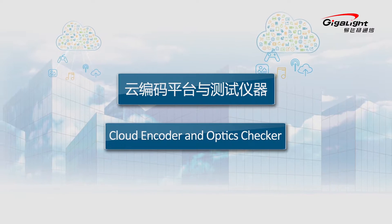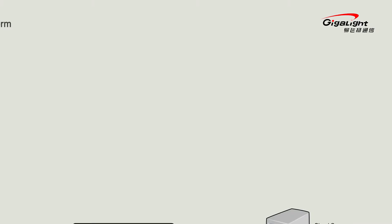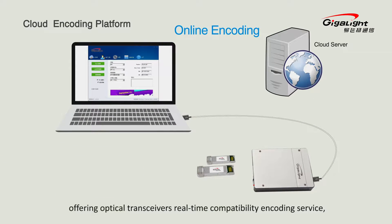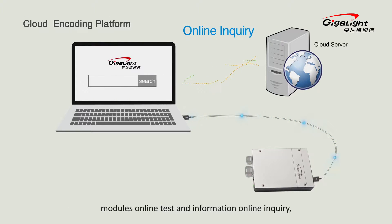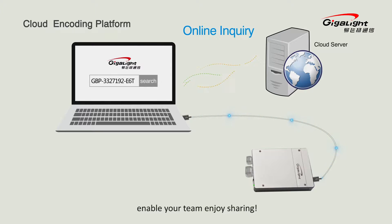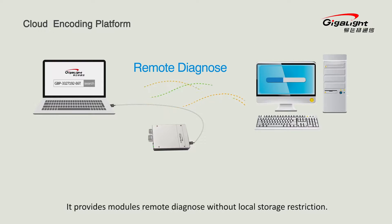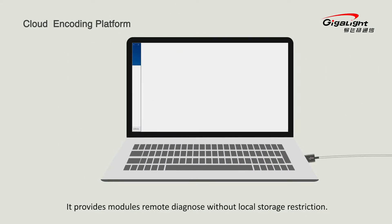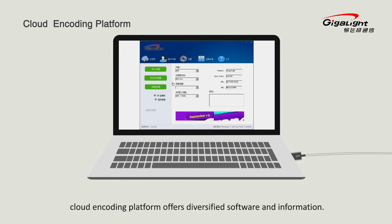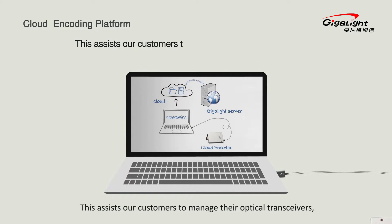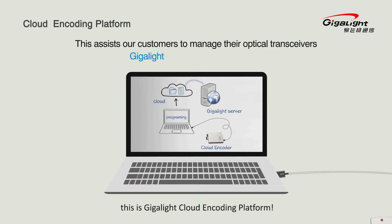Cloud Encoder and Optics Checker is a dynamic platform offering optical transceivers real-time compatibility encoding service modules, online test and information inquiry. It enables your team to enjoy the convenience of added switches compatibility encoding and various form factor checkers. It provides modules remote diagnostics without local storage restriction. This customizable cloud encoding platform offers diversified software and information to assist customers in managing their optical transceivers.